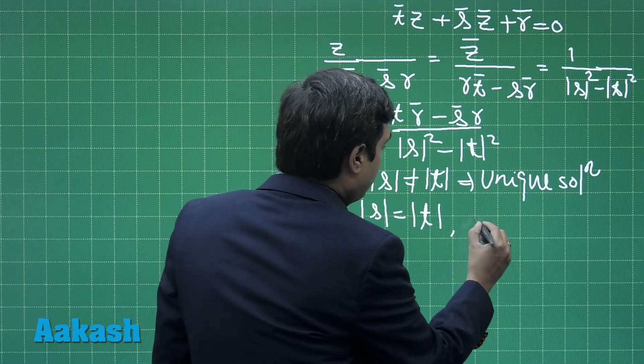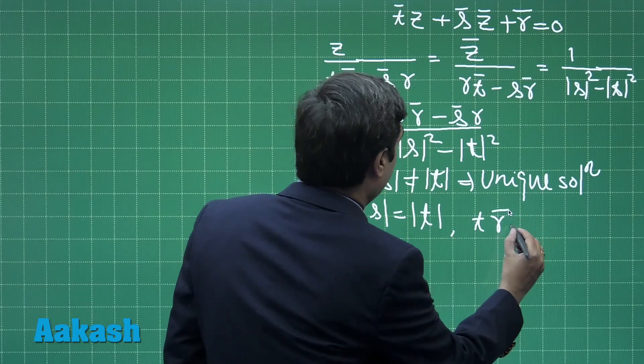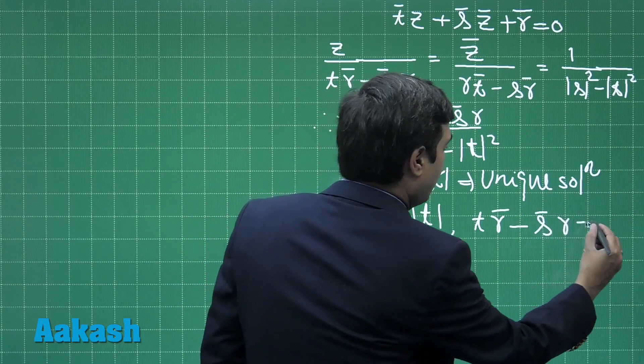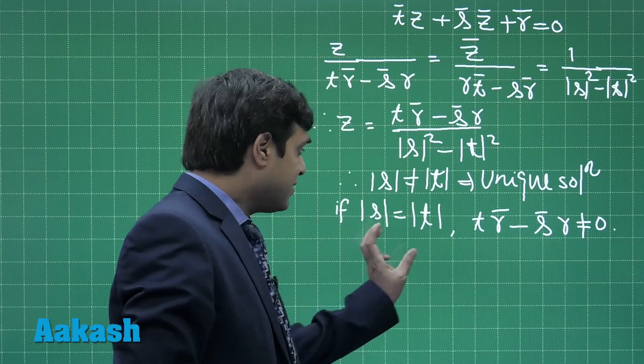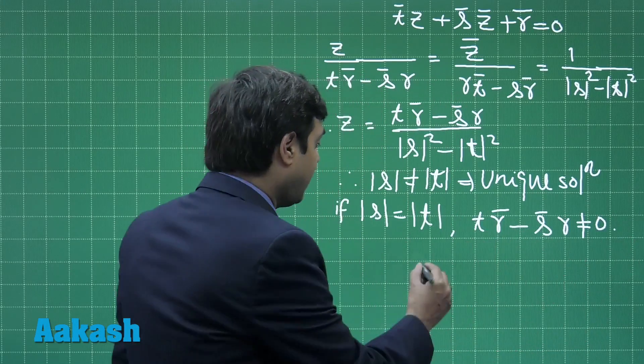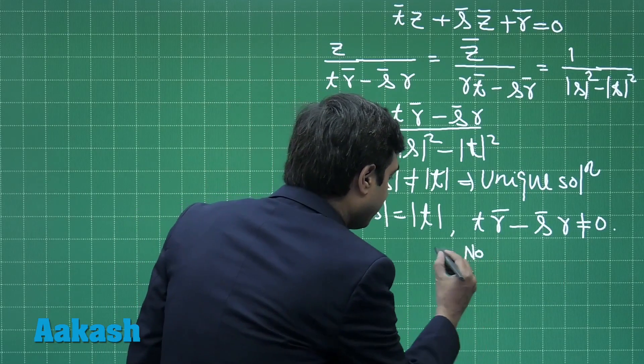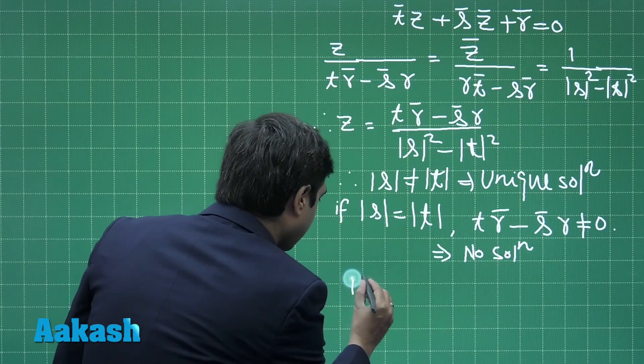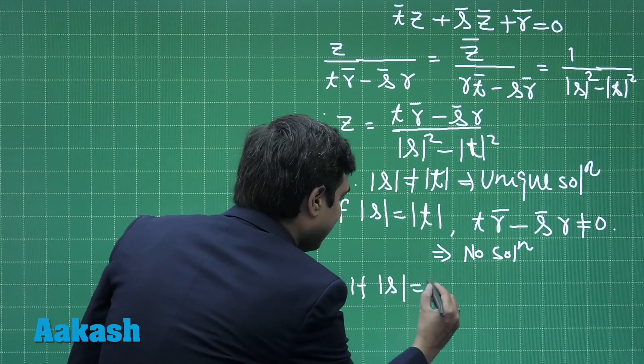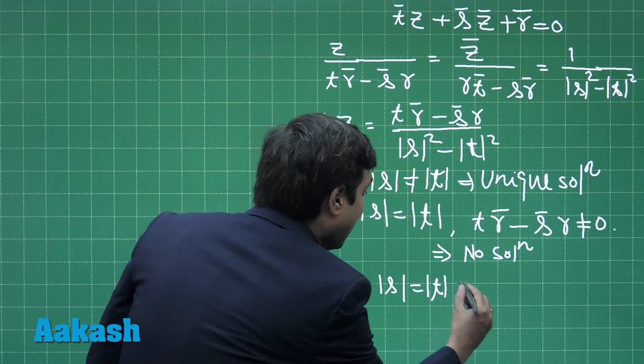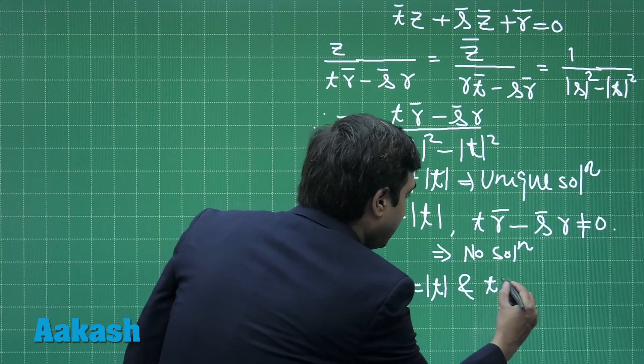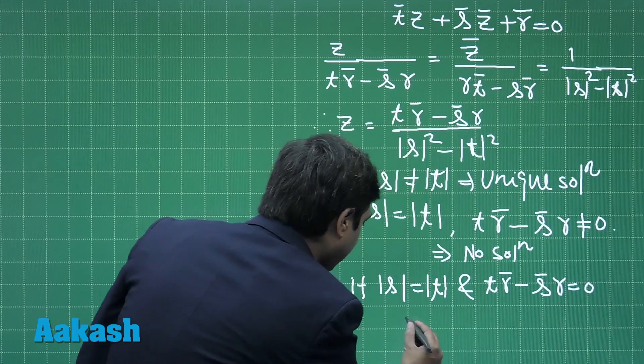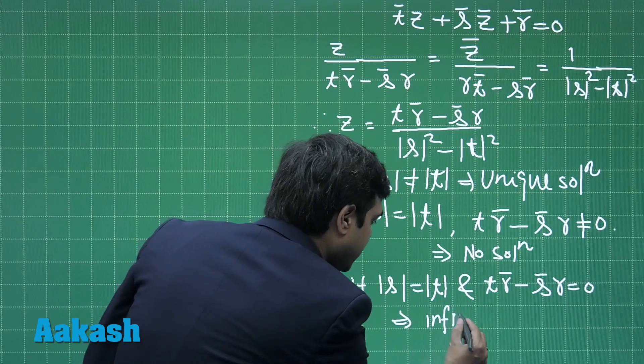One: Tr̄ minus S̄r is not equal to 0. If this one is 0, other is not, meaning that no solution.